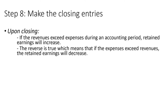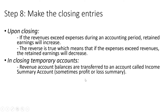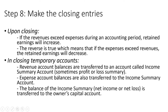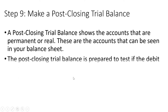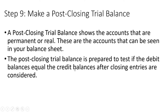Once that's done, you proceed to making the closing entries. If revenues exceed expenses, retained earnings will increase; the reverse means retained earnings decrease. Revenue account balances are transferred to an account called income summary. Expense account balances are also transferred to the income summary, and the balance — net income or net loss — is transferred to owner's capital. Then the post-closing trial balance is created to test if debit balances equal credit balances once closing entries are considered.